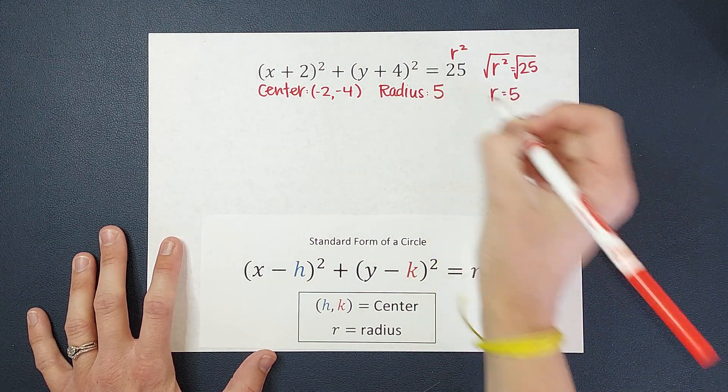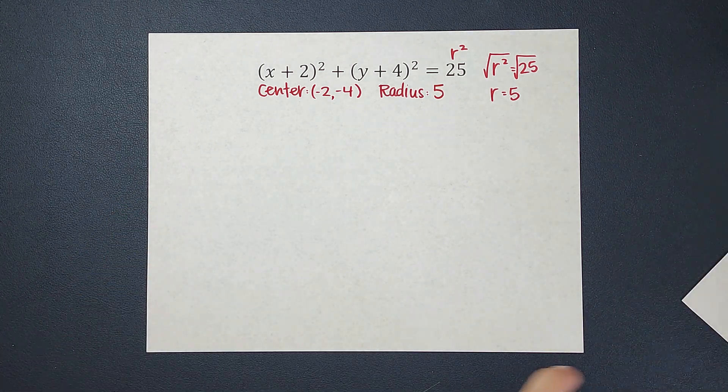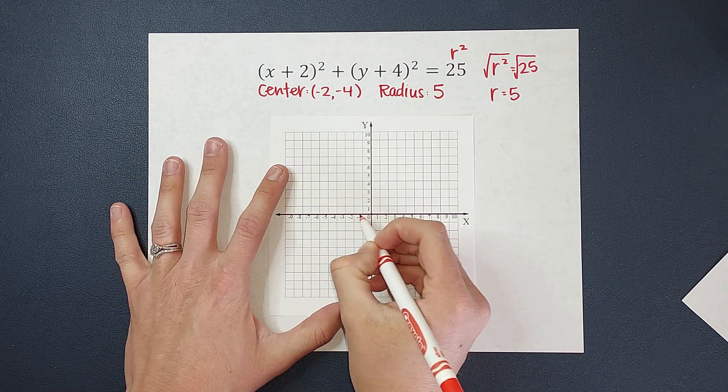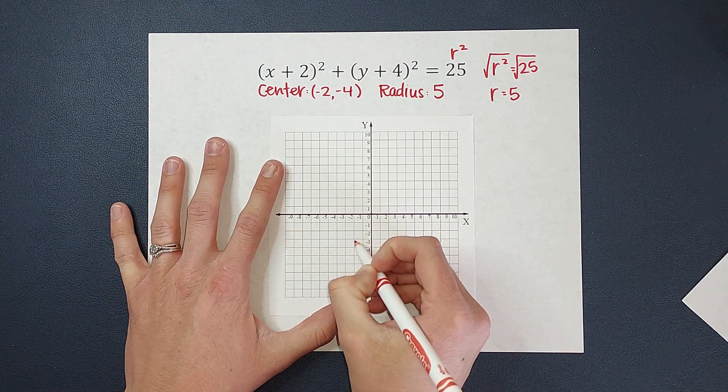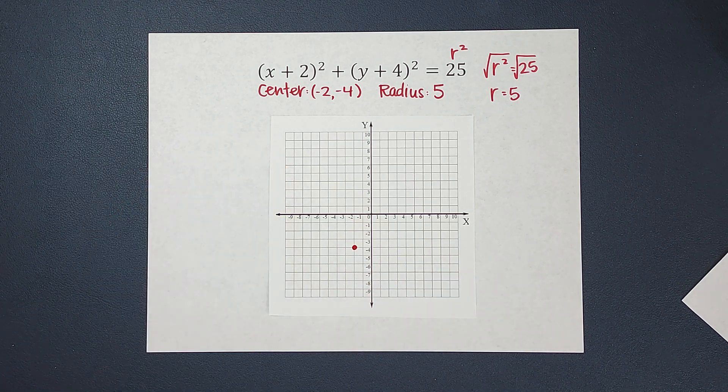So my radius is 5 and now that I have those two pieces of information, I can go ahead and graph this. So my center is the negative two, negative four. So right there, that is the center of my circle.